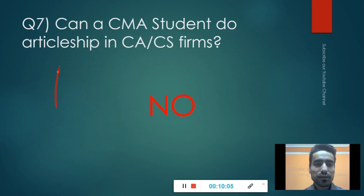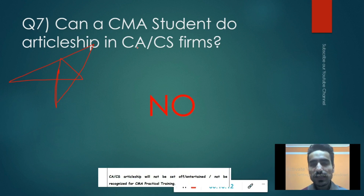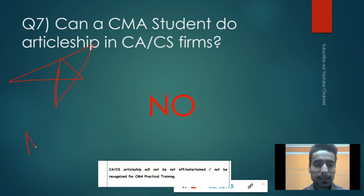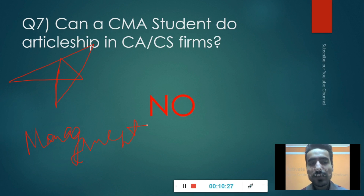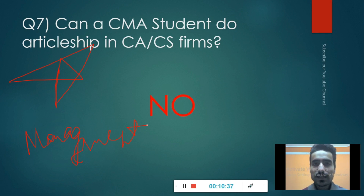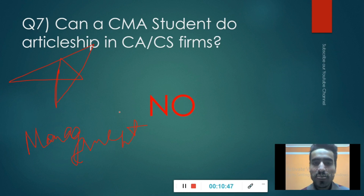An important question: Can a CMA student do articleship in CA or CS firms? No. There may technically be a management consultancy division in some CA firms, but you won't find this division in 99.99% of CA firms. Also, in the latest update for new students, it is clearly stated that a CA or CS firm articleship will not be set off against CMA articleship. So you cannot do practical training at CA or CS firms.